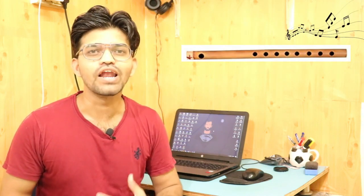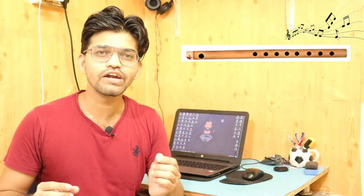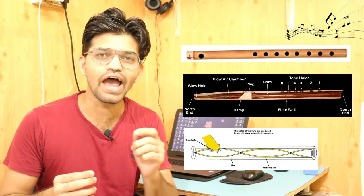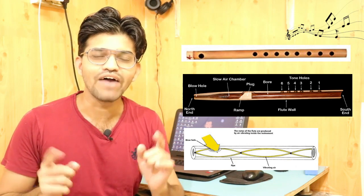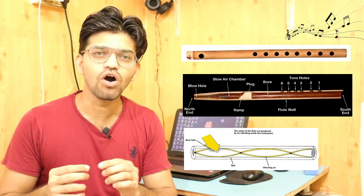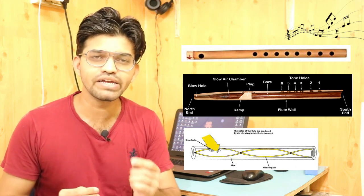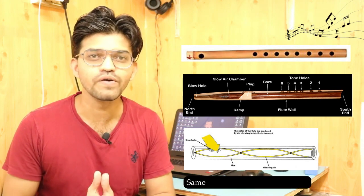Let's take the example of a flute. This particular flute produces a melody — a lovely sound. The input is air. The air goes inside the flute, which has N number of holes and a predetermined length, and when the air comes out through one of the holes, it produces a melody and sound.